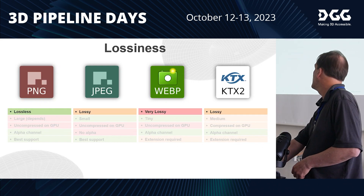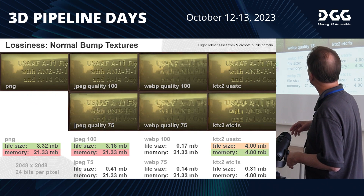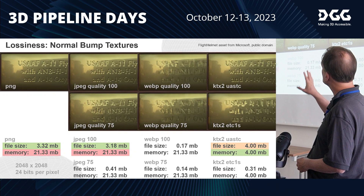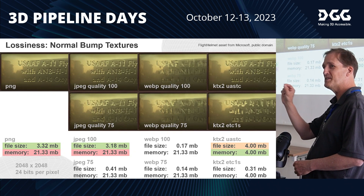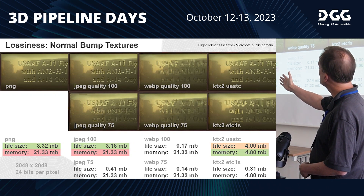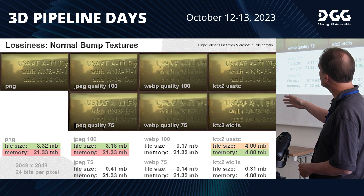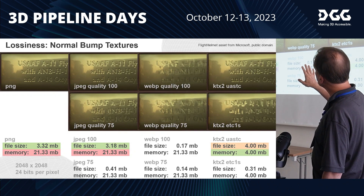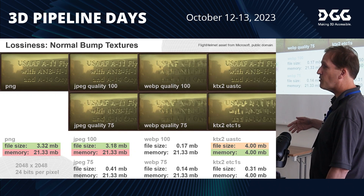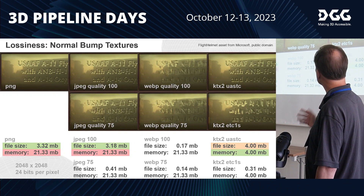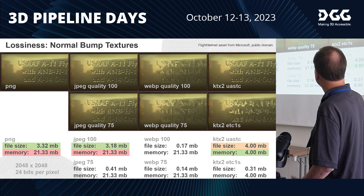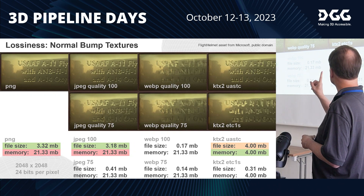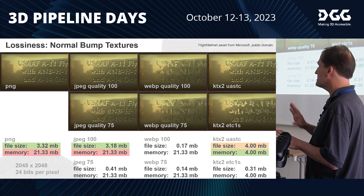Looking at the lossy compression examples for normal maps — which encode surface direction differences to make surfaces look bumpy — I chose the worst possible case: a shiny surface with high frequency detail like text. PNG gives you lossless compression, so you get a perfect result with no errors. JPEG at 100% quality looks pretty good with only a little noise, but as you drop quality to get a smaller file it turns into a noisy mess. WebP just destroys it — the compression is so high that it distorts all those surface normal directions, so it really doesn't work for high frequency normal map data.